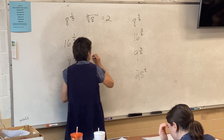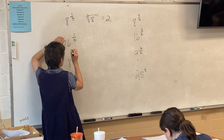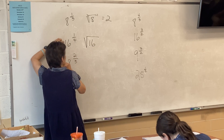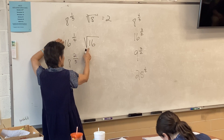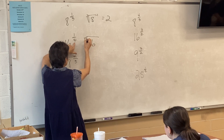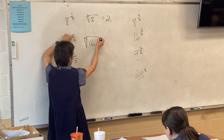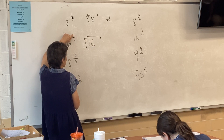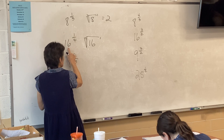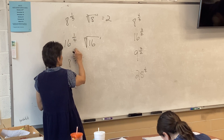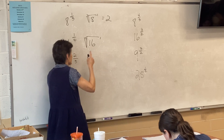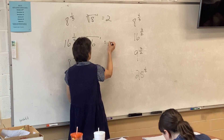The answer is two. What does this one mean? Well, it's a fraction so it's a radical. The number goes under the radical, the denominator tells me the root, the numerator tells me the power. So this means the fourth root of 16 to the first.